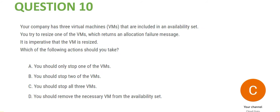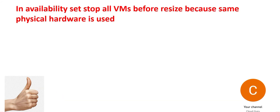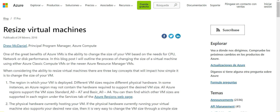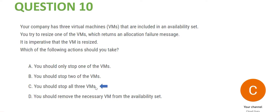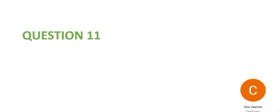The thumb rule is clear: in an availability set you have to stop all VMs before resizing, because the same hardware is used by all VMs. The documentation on resizing virtual machines clearly states you will have to stop all VMs. So C is the answer.